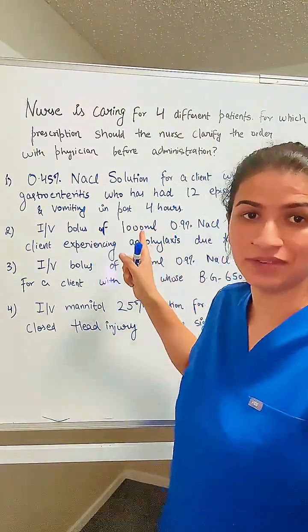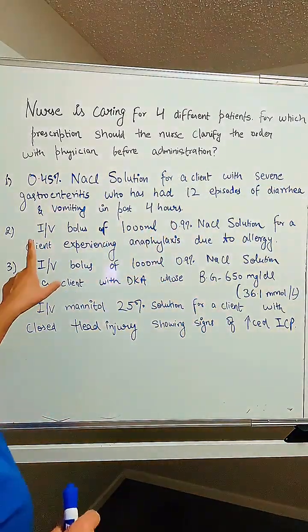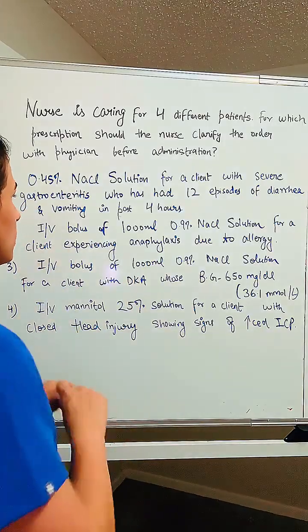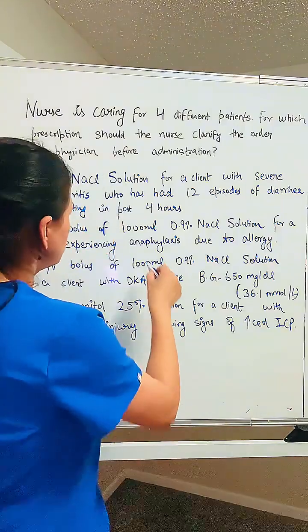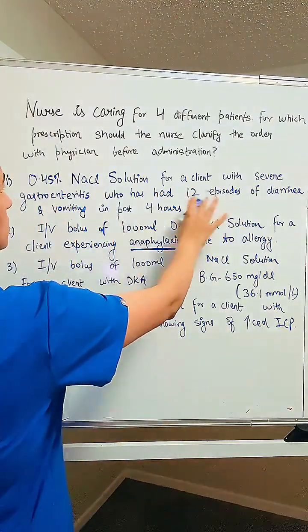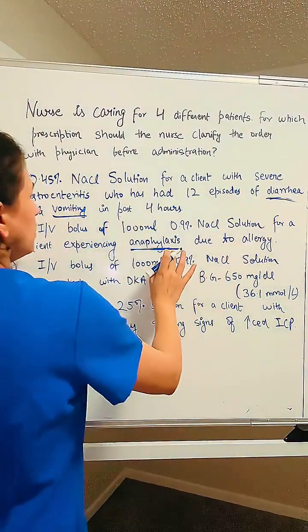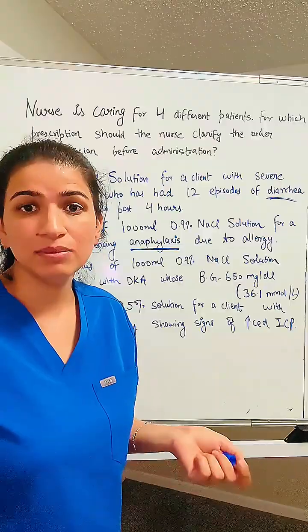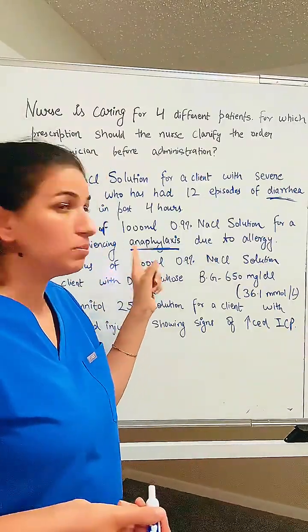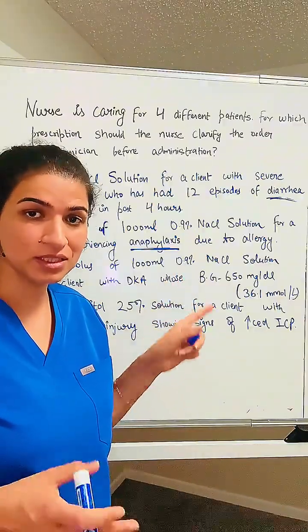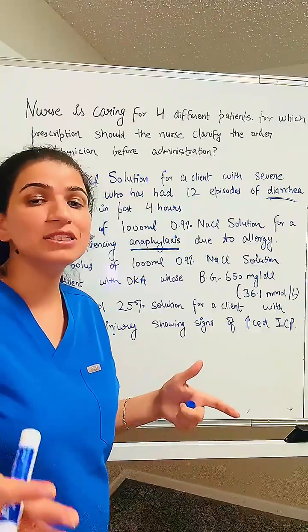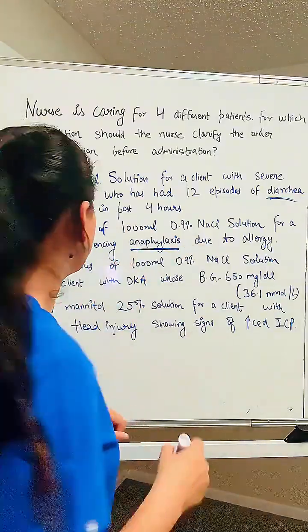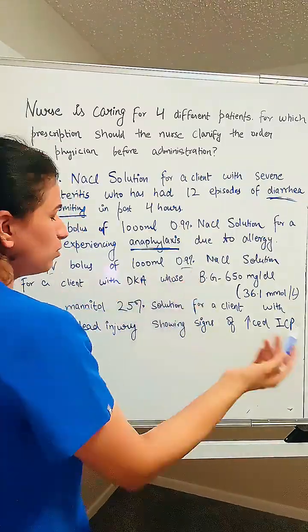Option two: IV bolus of 1000 mL 0.9% NaCl for a client with anaphylaxis. In anaphylaxis, vasodilation occurs and leads to low blood pressure, so giving an isotonic solution as an IV bolus is appropriate — it's an emergency. Option three: IV bolus of 1000 mL 0.9% NaCl for a client with DKA and high blood sugar — high sugar causes risk for dehydration, so an IV bolus of isotonic solution makes sense here too.